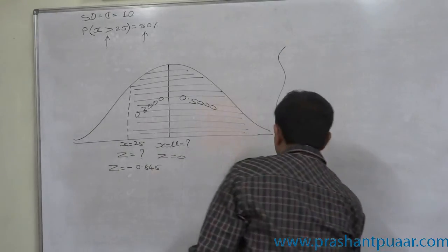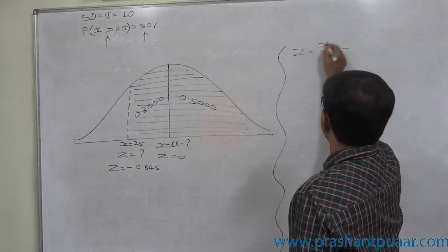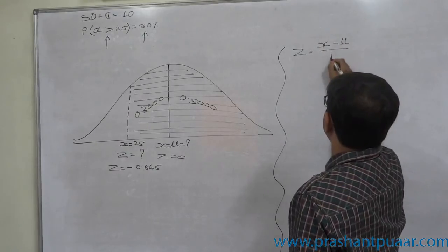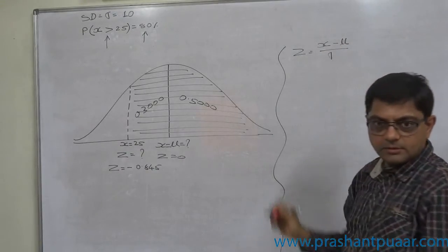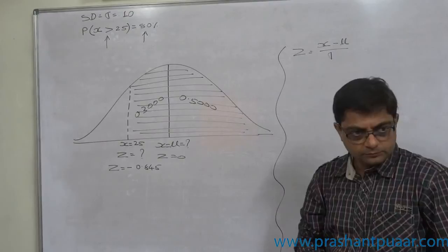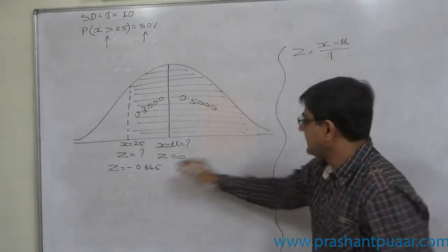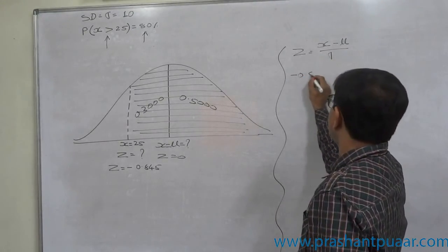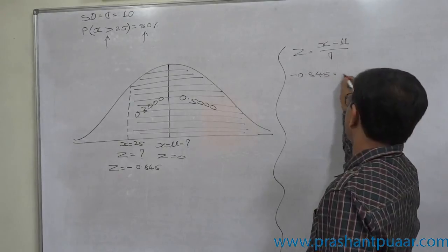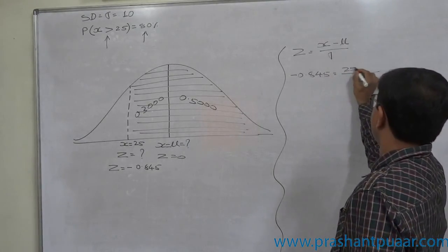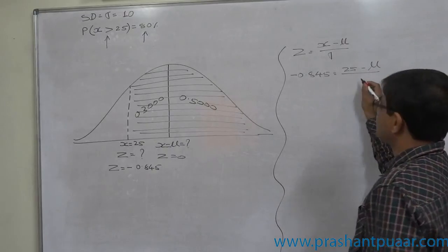Now we know the formula of z-score: z equals to x minus mean divided by standard deviation. We know that z is minus 0.845, x is 25, mean is missing.